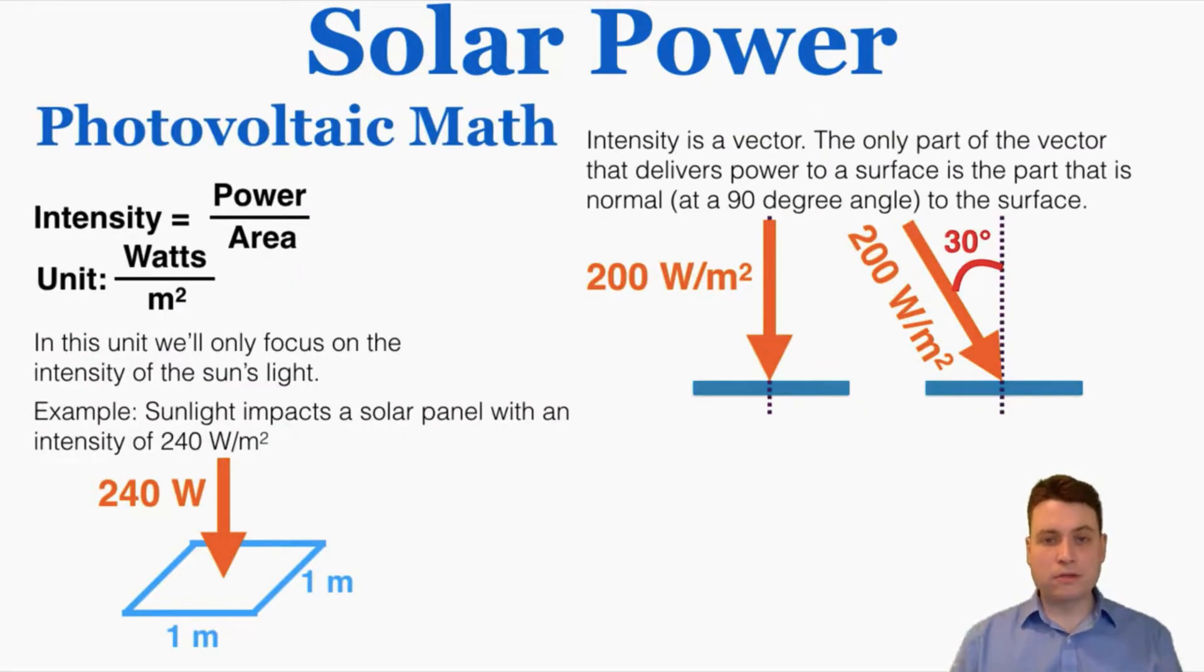Doing math with solar power usually involves the photovoltaic panels specifically. To understand the math, you're going to have to understand the idea of intensity, which is the power delivered to a specific area, and it's measured in power over area. The unit is watts per meter squared.